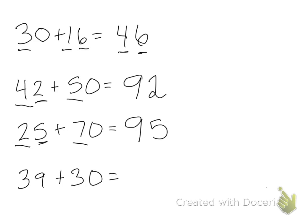And on the next one, 30 plus 30 is 60. So then what's 9 more? That's 69.